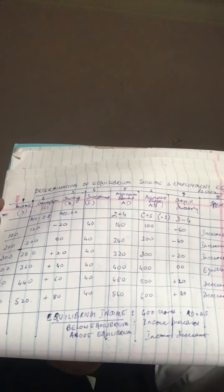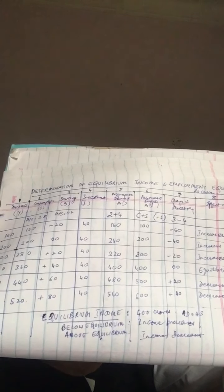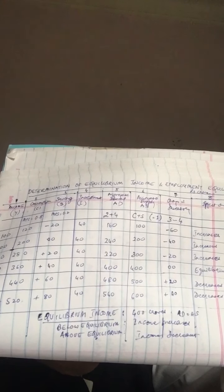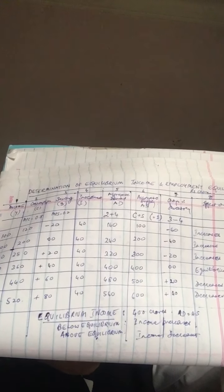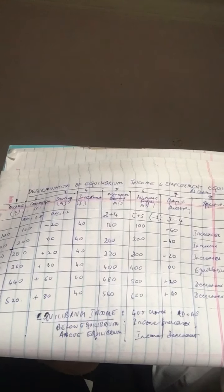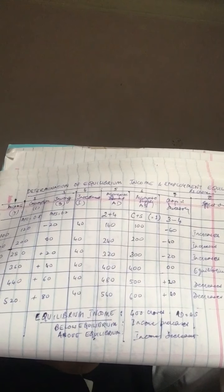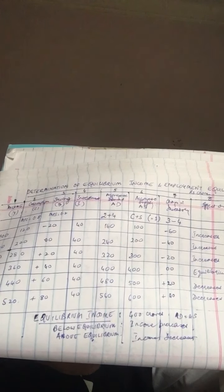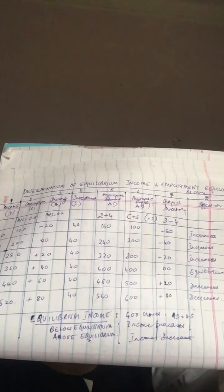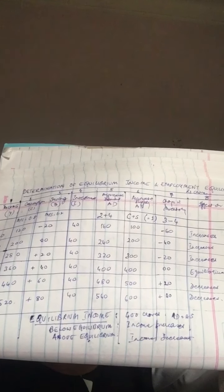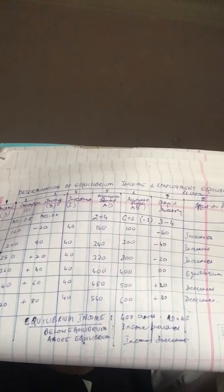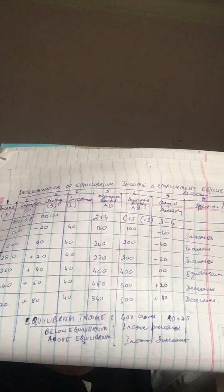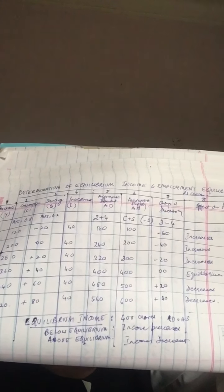And so on. At equilibrium we have income of 400, consumption 360, savings 40, investment 40. Aggregate demand is 400 and aggregate supply is 400. Change in inventory is nil and there is equilibrium in the economy. So in the table the economy is in equilibrium at the income level of rupees 400 crores. At this level aggregate demand equals aggregate supply, that is 400 and 400, and inventory change is zero.